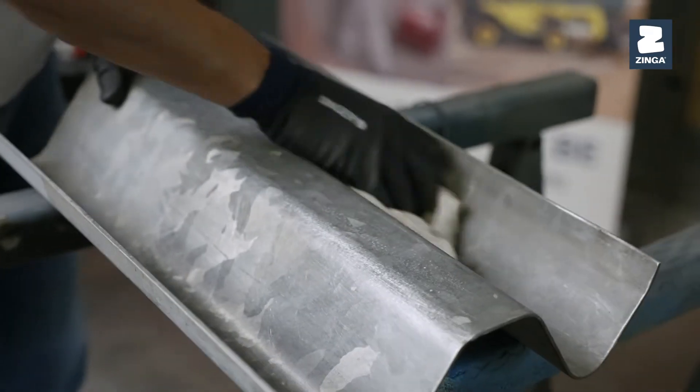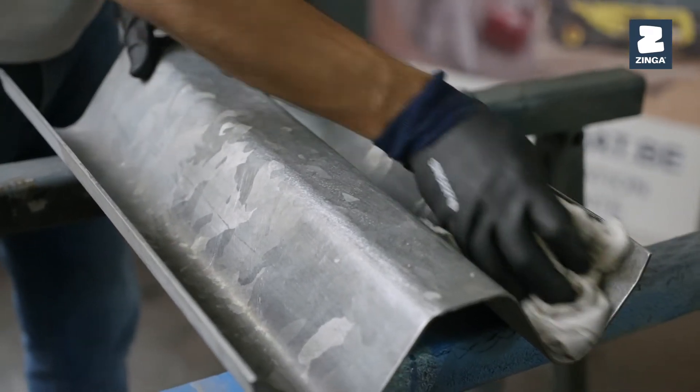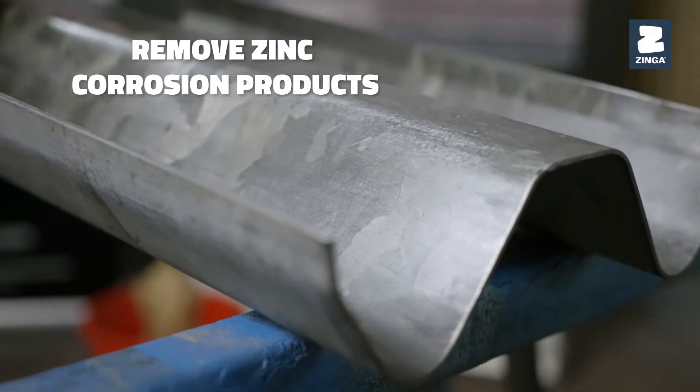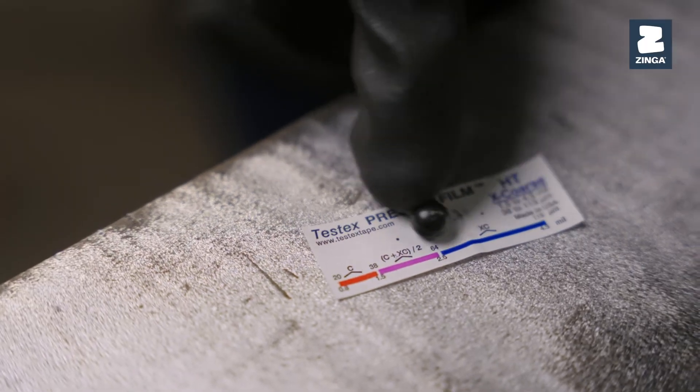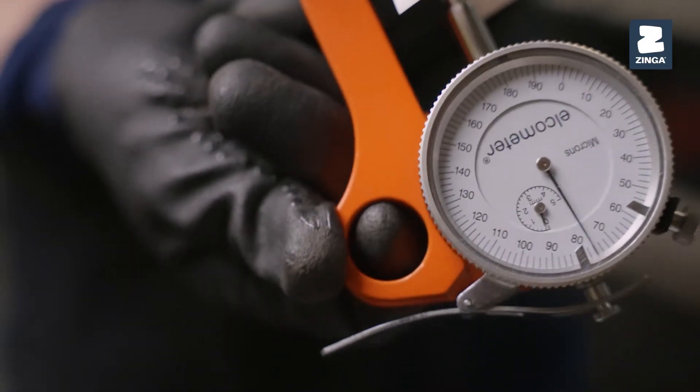To reload old or thin galvanized structures, the zinc corrosion products need to be removed. Remember, a well-prepared and clean surface sets the foundation for a durable coating system.